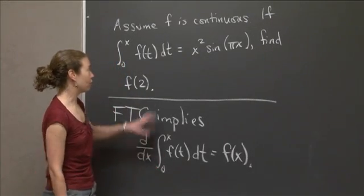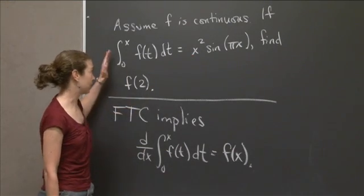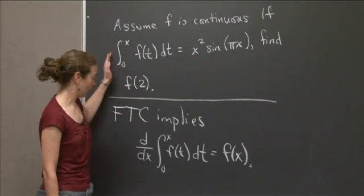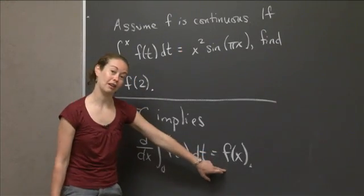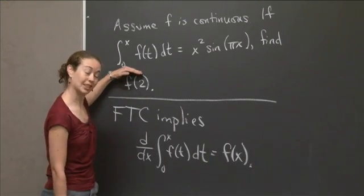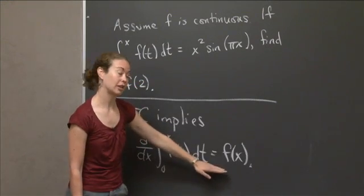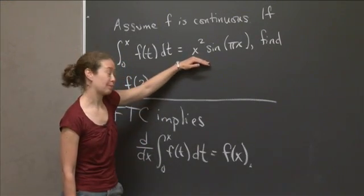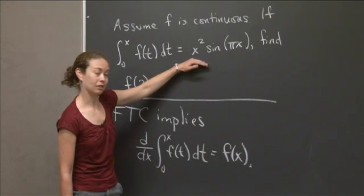So we know that d/dx of the right-hand side and d/dx of the left-hand side are the same. And so we know that if we take d/dx of the right-hand side, we'll get little f of x. Because d/dx of the left-hand side of this equation is little f of x. So d/dx of the right-hand side is also little f of x. So now all we have to do is apply what we know about taking derivatives to find little f of x.